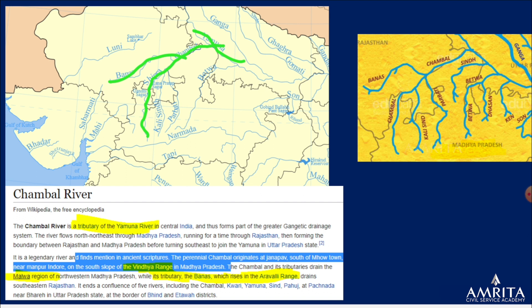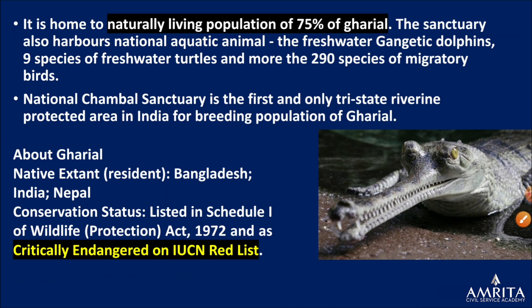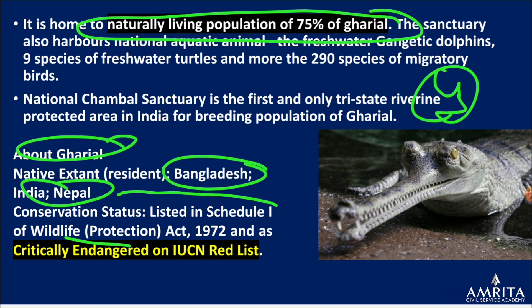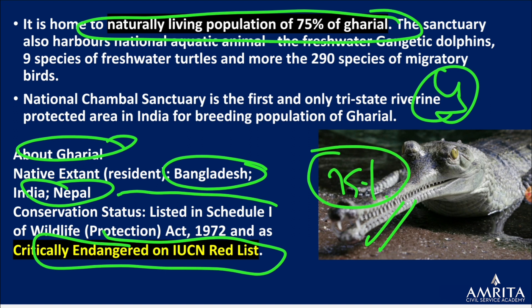Important tributaries of Chambal are Banas, Parvati, and Kalisindh. The river passes through the Malwa region of MP. Questions are sometimes asked about regional geography — Malwa region, Mewar region, Bundelkhand, Baghelkhand. The Chambal Sanctuary is home to 70% of gharials. Gharials are critically endangered on the IUCN list and are found in Bangladesh, India, and Nepal. 75% of Indian gharials are in the Chambal Sanctuary.